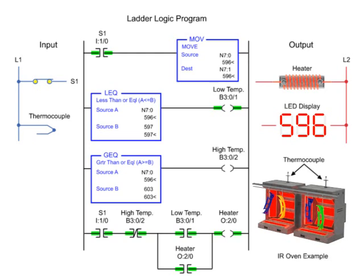The heater remains on as long as the low temp output is true and the high temp output is false. As the temperature rises above source B of the less than or equal to instruction, low temp turns off and heating continues.